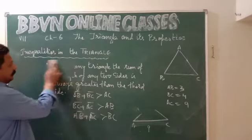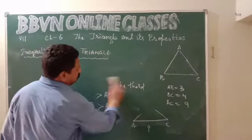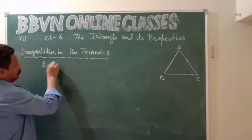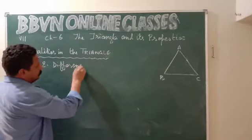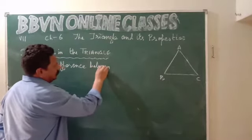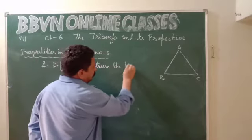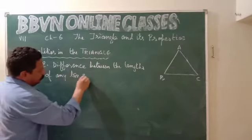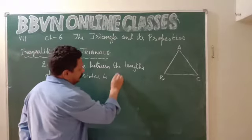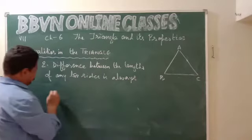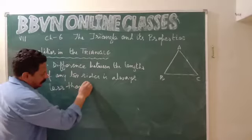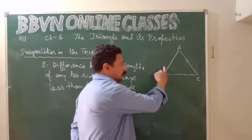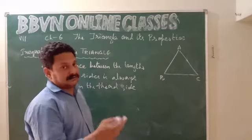Now the second property: the difference between the length of any two sides is always less than the third side. The difference between any two sides will be smaller than the third side.